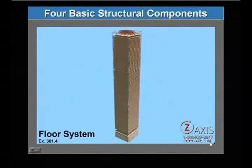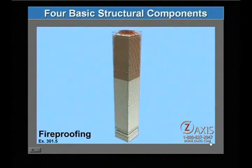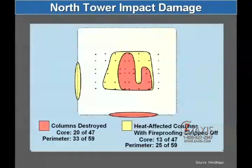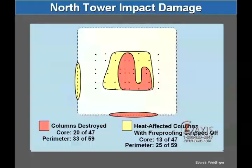Fireproofing material was sprayed over all the exposed steel surfaces that made up the core, perimeter tube, and floor support trusses. This fireproofing was designed to protect the steel in the event of a typical office fire. And on 9/11, the fireproofing did its job in the places where it was not knocked off by the high-velocity debris from the impacting aircraft.